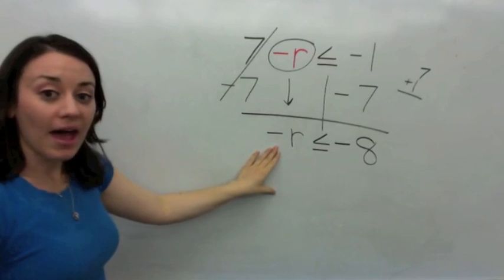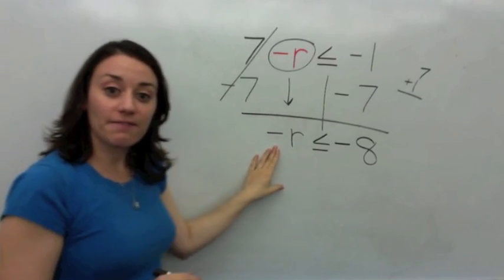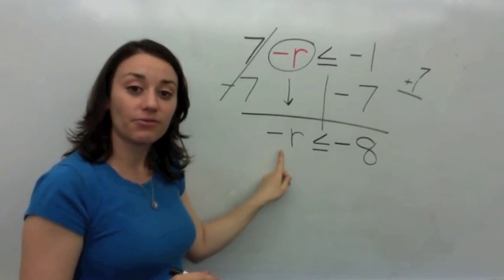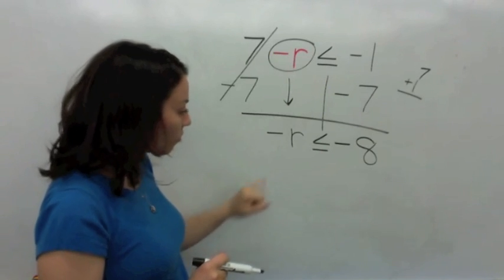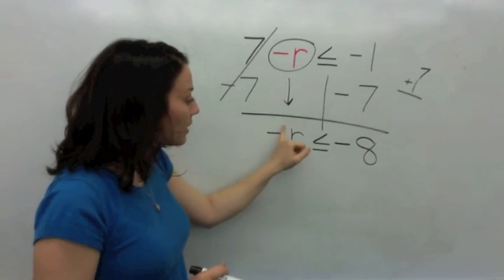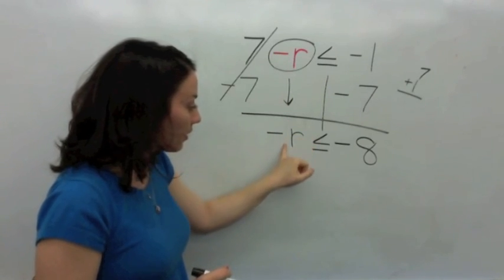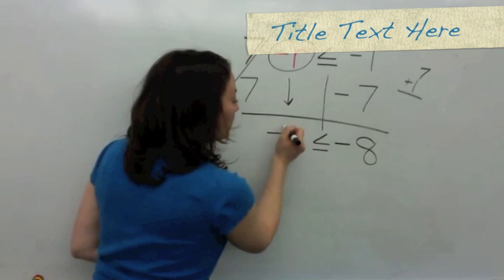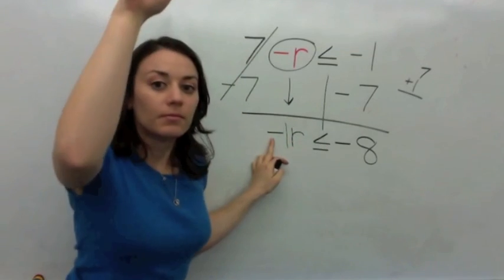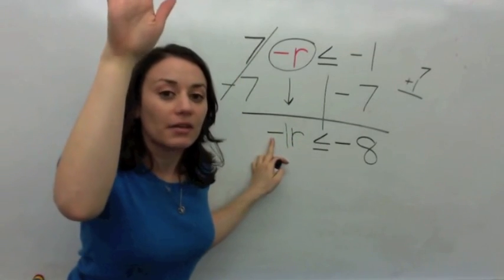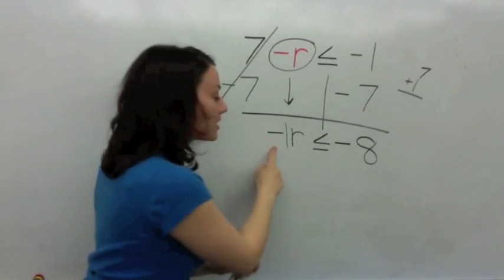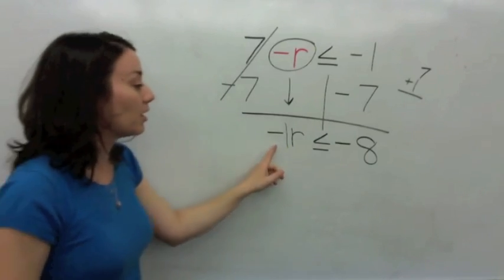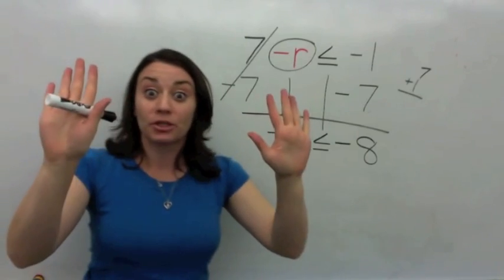So you have a very funny situation because you have a negative in front of a variable. There's really an invisible number here — it is actually an invisible 1. Is this a negative? Yeah, Dad, that's a negative 1.